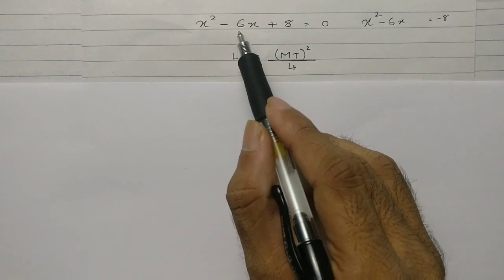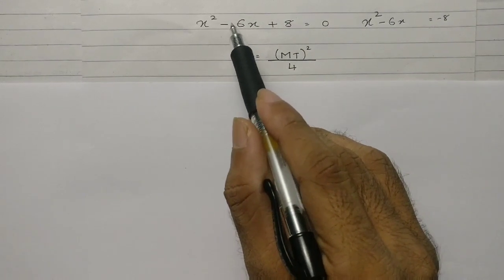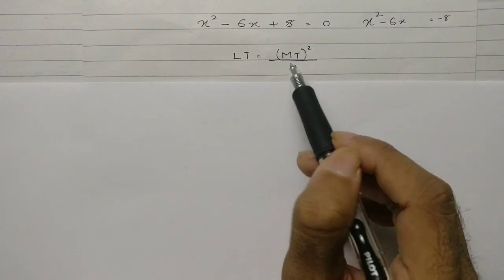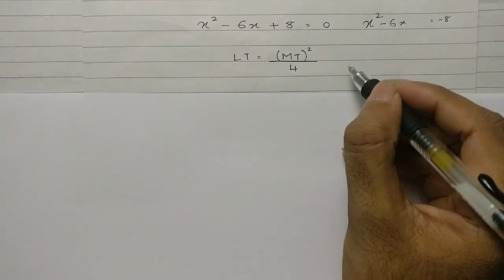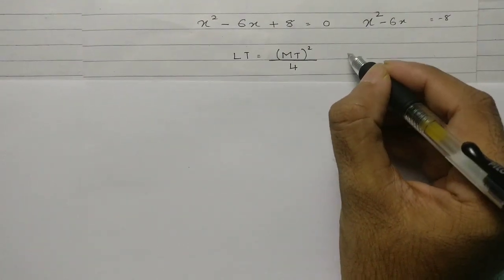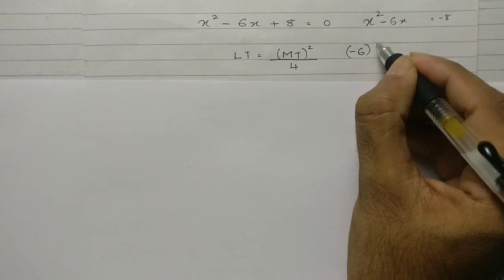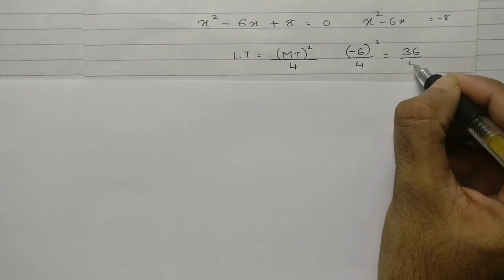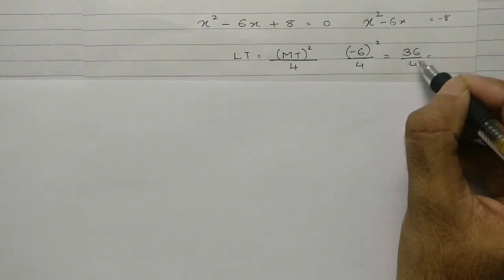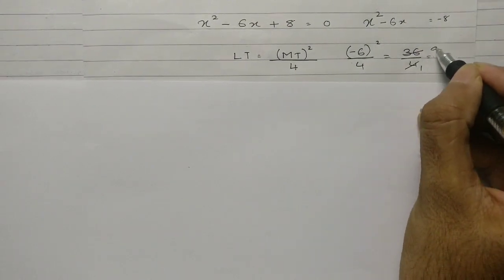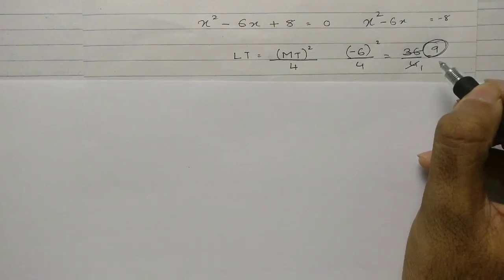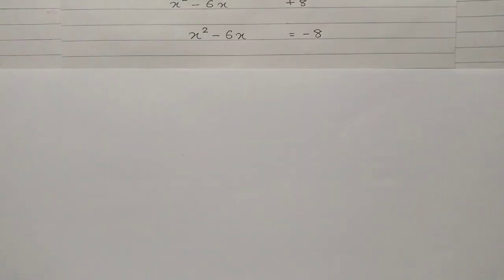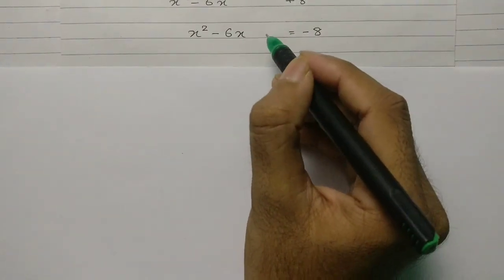All I will do is square the middle term and divide by 4. That will give a new term: minus 6 squared upon 4, which is 36 upon 4. Cancelling, this becomes 9. So 9 is my new term.